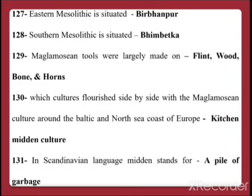Question 128: Maglemosian tools were largely made of flint — a cutting tool like a blade. Second were wood tools, basically used as bows, arrows, or handles for hammers. Third were bone tools, mainly used for hunting purposes, and fourth were horns, used for hunting, killing, and digging as tools.